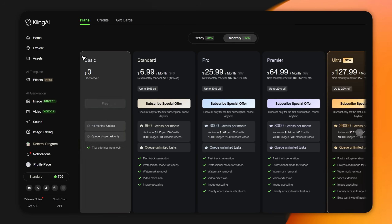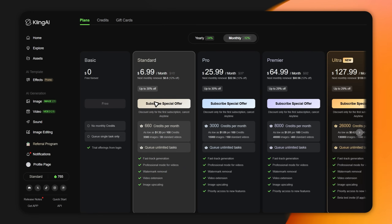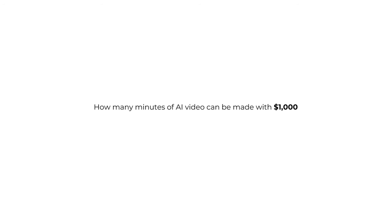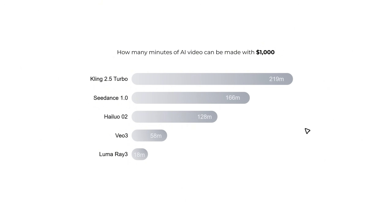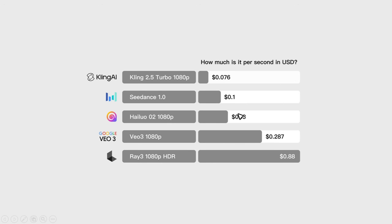Now let's talk about cost, because this is where Kling really wins. You can start for just $7 a month. With a $1,000 budget, Kling gets you over 219 minutes of HD video. Compare that to tools like Veo or Luma Ray 3 — that same $1,000 might only get you 18 to 58 minutes. That means Kling gives you up to 11 times more content for your money. It costs about 7.5 cents per second on Kling, while other platforms can charge up to 88 cents per second. A five-minute video that costs $264 elsewhere costs just $22.50 on Kling — you can make 10 videos for the price of one.